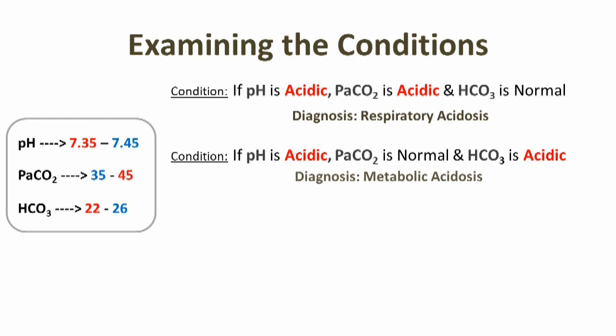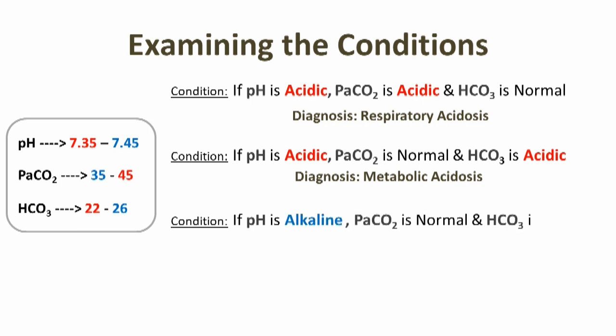Condition number three: if pH is alkaline, PaCO2 is normal, and HCO3 is alkaline, then it indicates metabolic alkalosis. Because HCO3 means metabolic and pH is alkaline here, therefore metabolic alkalosis.